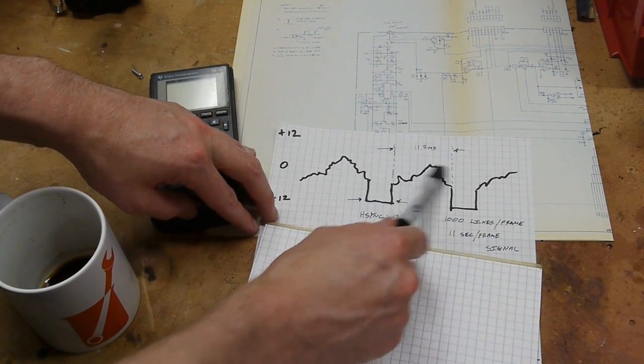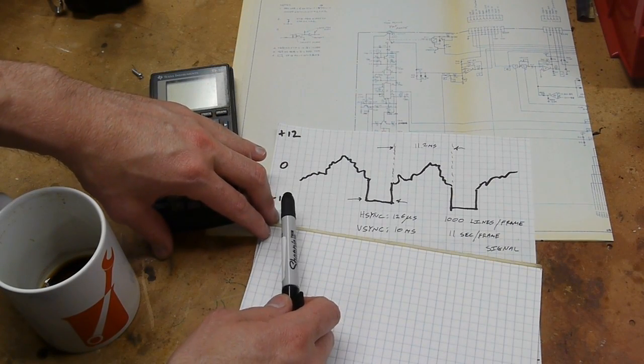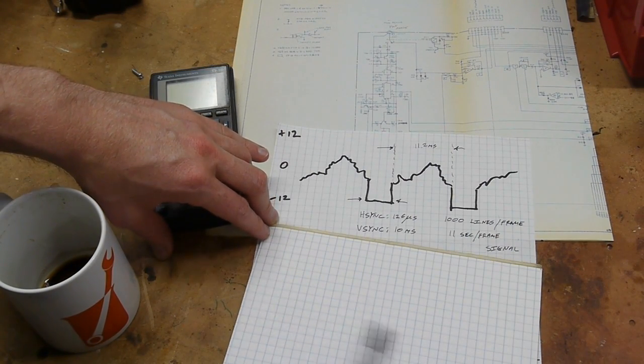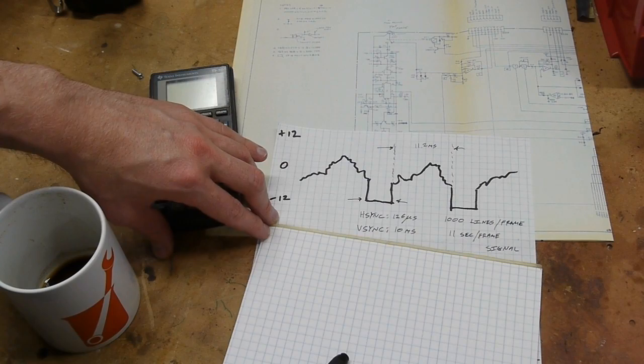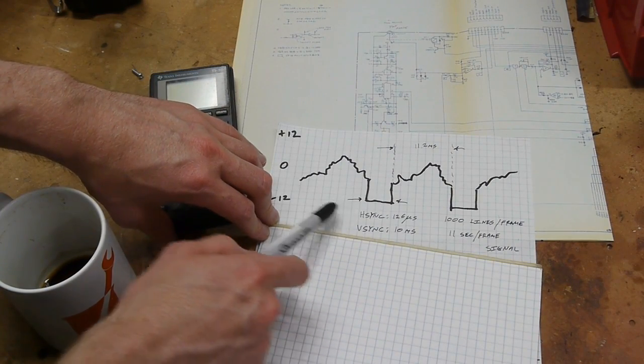Then there's analog data for 11.2 milliseconds. This repeats for every horizontal line, and when we get to the bottom of the frame, there's a much longer pulse of about 10 milliseconds.